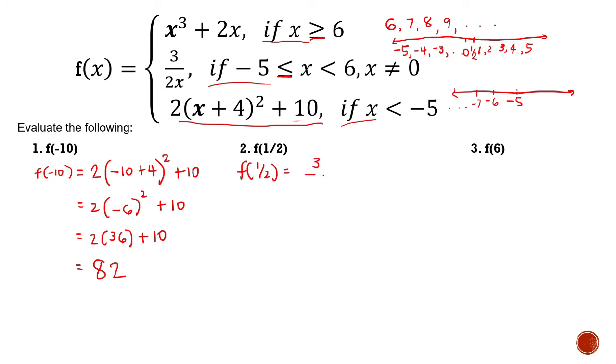So 3 over 2, let's change x. 3 divided by 2 times 1/2 is 1, so the answer is 3. Now try answering number 3. Actually, the answer here is 228. So which piece are we going to use here? It will be the first piece because 6 is included in this interval. So that's how to evaluate piecewise functions. I hope I made it clear and easy. If you don't understand, please leave a comment. So see ya!